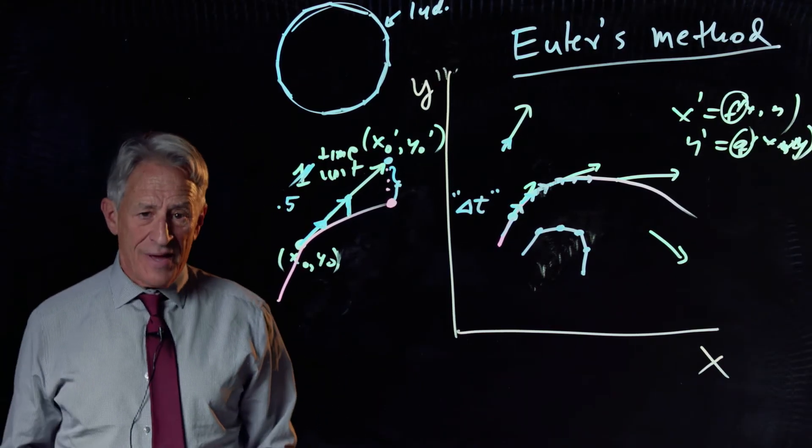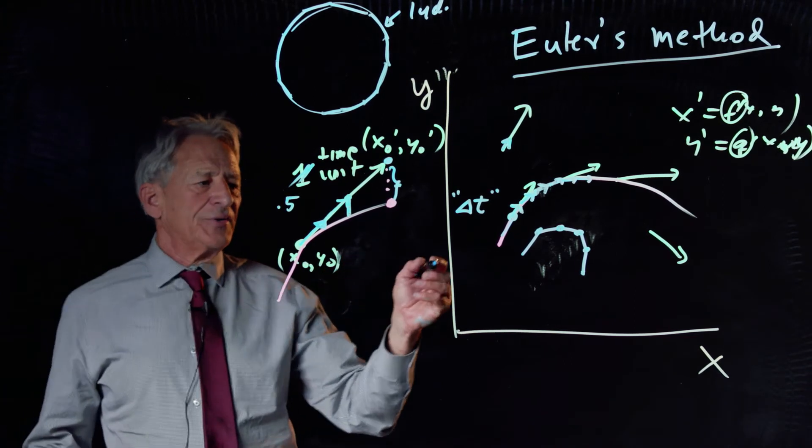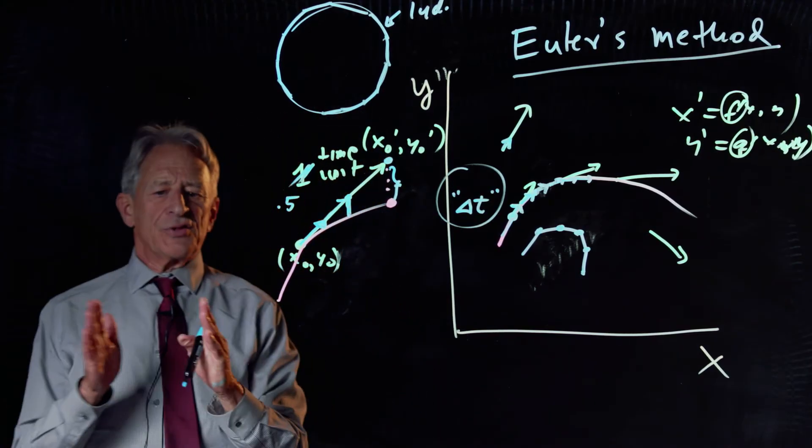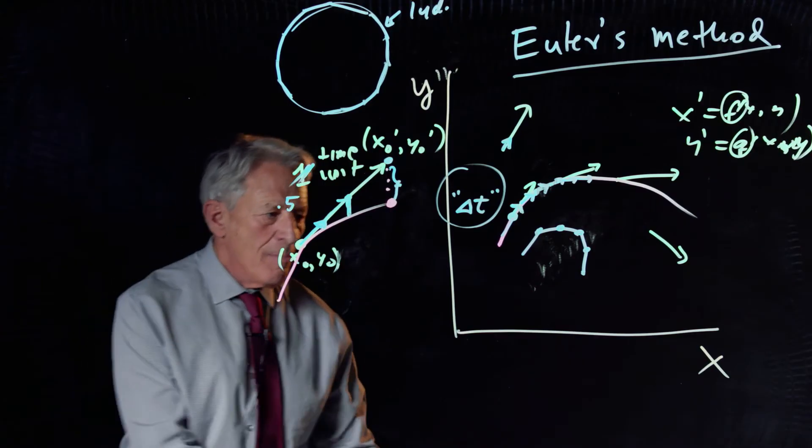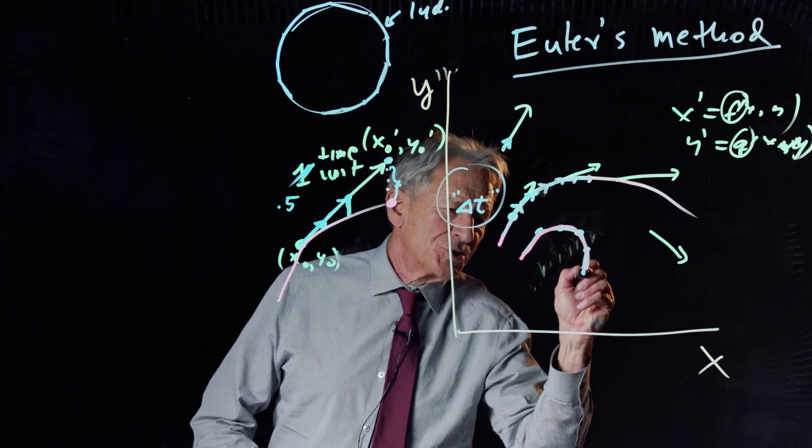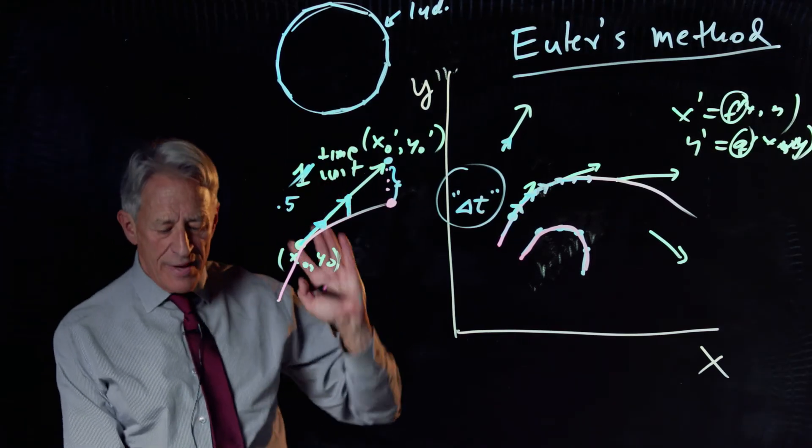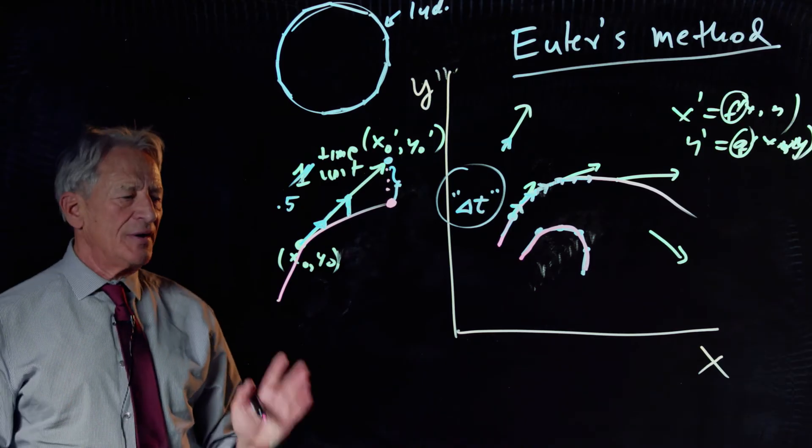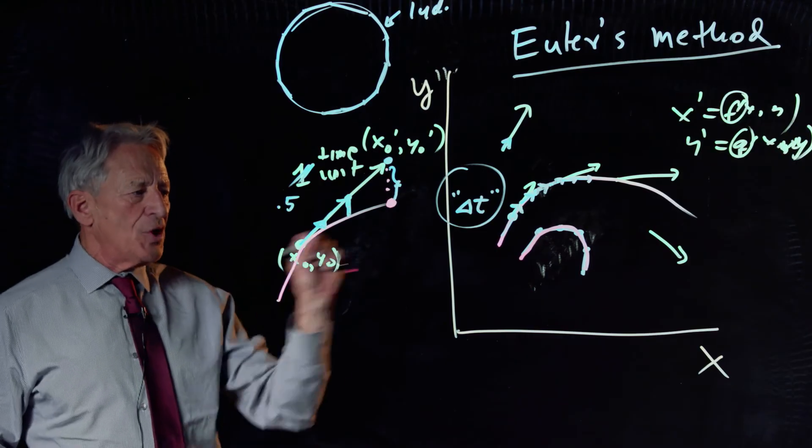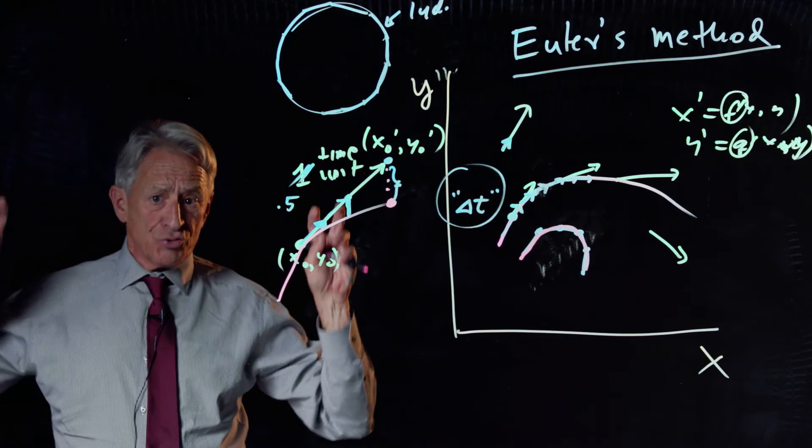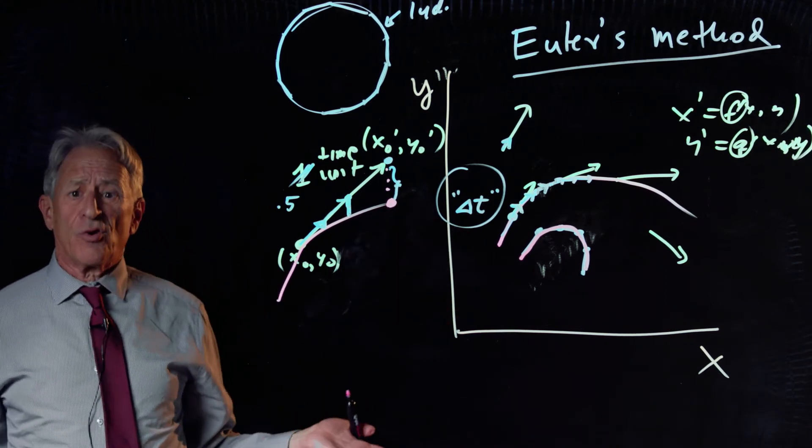as delta T gets smaller and smaller, the broken blue line mathematically approaches the true red curve. So there really is a mathematical theorem that's going to guarantee us that this little finite steps is going to really approximate the one true curve, which exists and is out there, but we can't know it or know its formula.